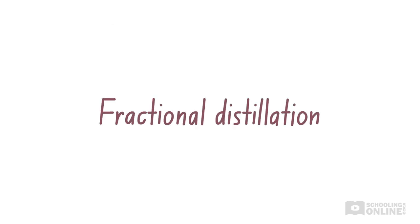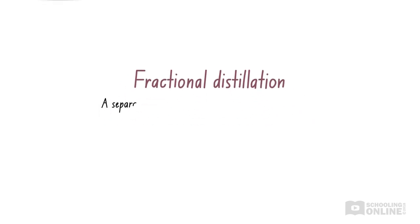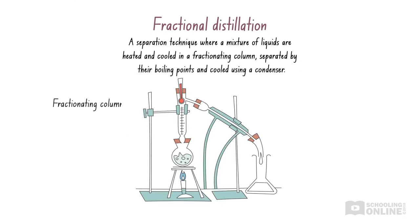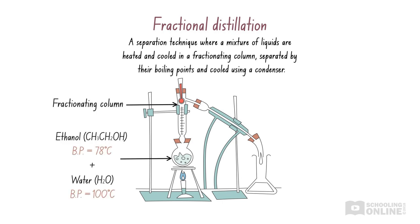Now, let's continue looking at separation techniques based on boiling points. Fractional distillation is a separation technique where a mixture of liquids are heated and cooled in a fractionating column, separated by their boiling points, and cooled using a condenser. A fractionating column is a special piece of laboratory apparatus — usually a tall glass column that helps separate mixtures in fractional distillation. Fractional distillation is commonly used to separate a mixture of miscible liquids with similar boiling points, such as ethanol and water. Remember, miscible liquids can be mixed in any proportion to form a homogeneous mixture.